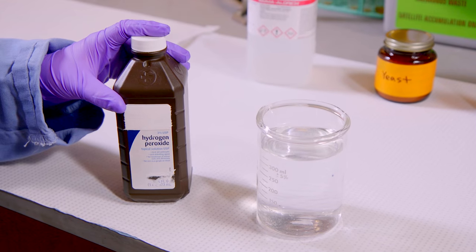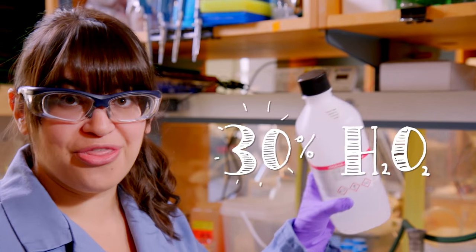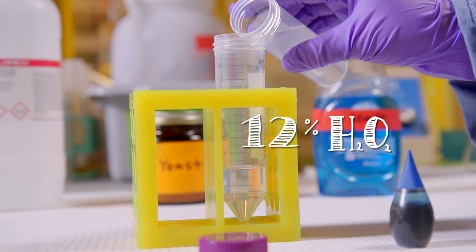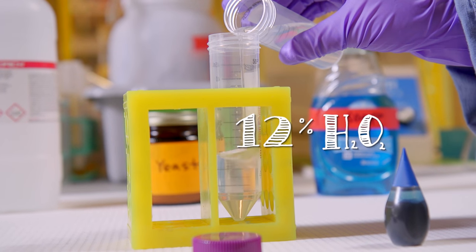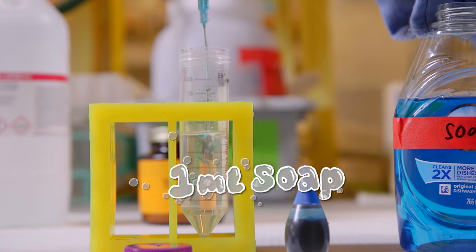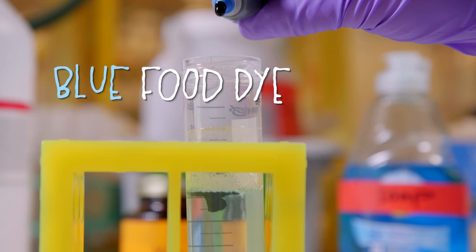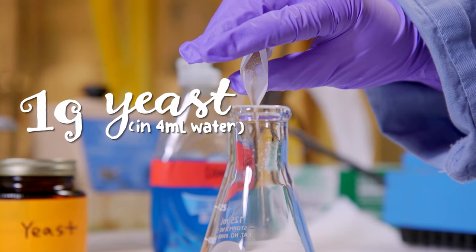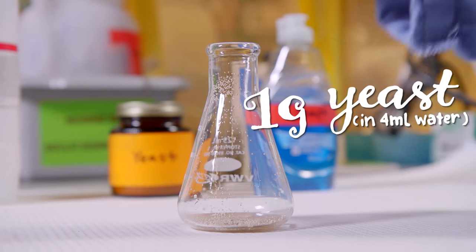This is the hydrogen peroxide you can buy at the drugstore. It's not very strong, it's only 3%, but this one is 30%. I'm diluting this down with water to 12%, mixing one milliliter of dish soap and some food coloring. I'm also taking a gram of yeast and activating it with four milliliters of warm water.